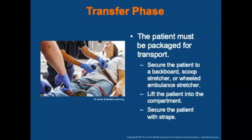In the transfer phase, excessive speed is unnecessary and dangerous and may prevent the provider in the back of the ambulance from rendering appropriate care, as well as alarming the patient. Use common sense and defensive driving techniques. The patient must be packaged for transport — secure the patient to a backboard, scoop stretcher, or wheeled ambulance stretcher. Properly lift the patient into the patient compartment and secure with at least three straps across the body. Use deceleration or stopping straps over the patient's shoulders, especially if the patient is laying flat or secured to a backboard.